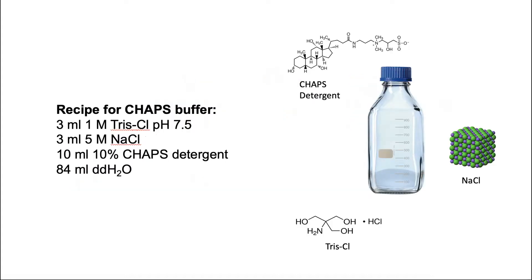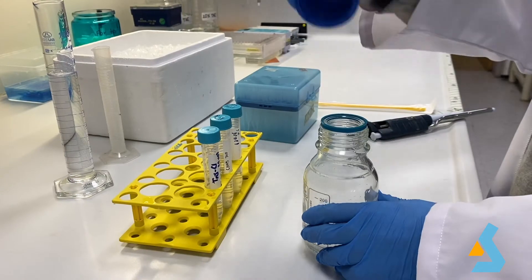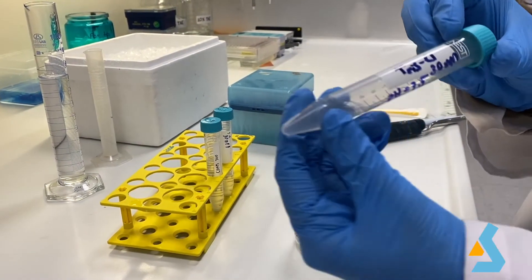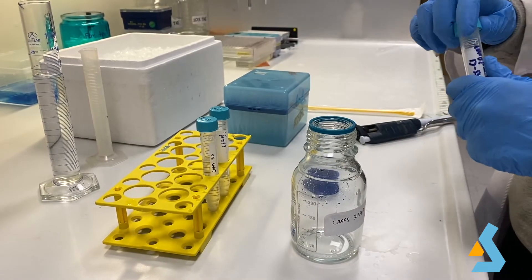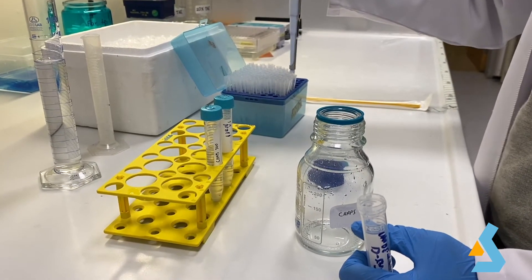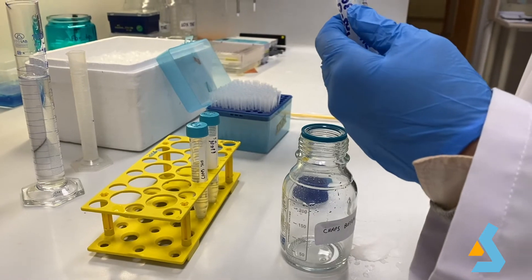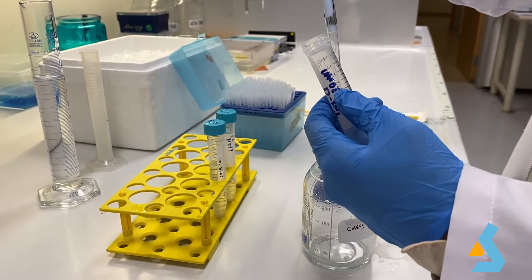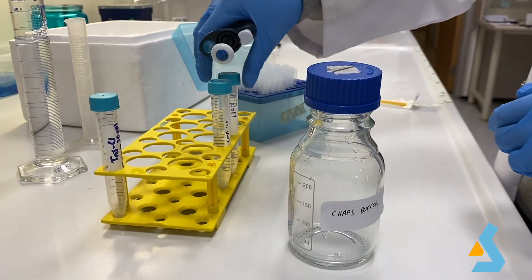Here you can see the recipe for CHAPS buffer. For 100 milliliters of CHAPS buffer, you need 3 milliliters of 1 molar Tris-chloride at pH 7.5, 3 milliliters of 5 molar sodium chloride, 10 milliliters of 10% CHAPS detergent, and 84 milliliters of double-distilled water to fill it up to 100 milliliters. To prepare the CHAPS buffer, measure 84 milliliters of double-distilled water, then add 3 milliliters of 1 molar Tris-chloride at pH 7.5 and 3 milliliters of 5 molar sodium chloride. Finally, add 10 milliliters of 10% CHAPS detergent and the CHAPS buffer is ready to use.